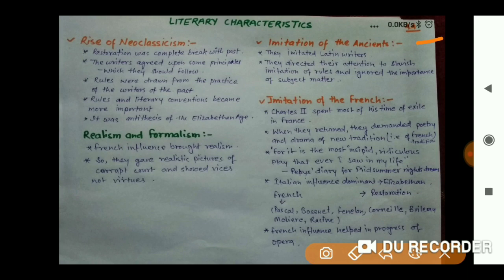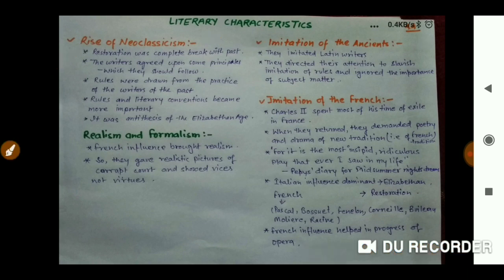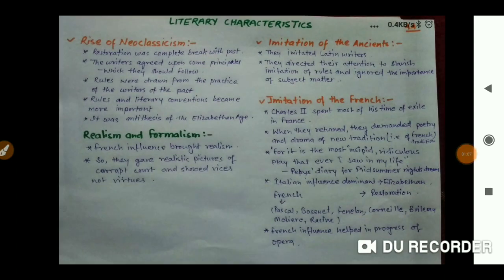It is very important to know the literary characteristics of the age in order to understand it. This is not just about memorizing the works of writers, but knowing what is behind those works — what writers were thinking and what situations they were facing. The four main characteristics of this age are: rise of neoclassicism, imitation of ancients, imitation of French, and realism and formalism. The Restoration Age was a complete break with the past, and writers agreed upon certain principles to follow.